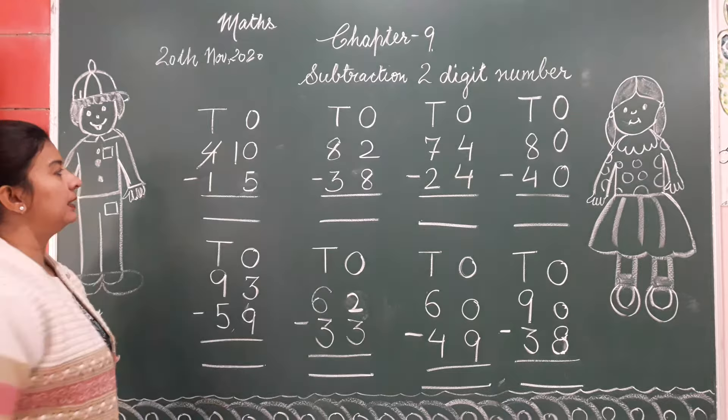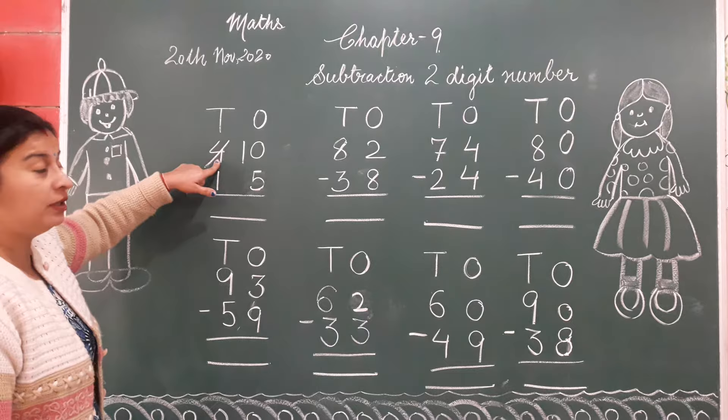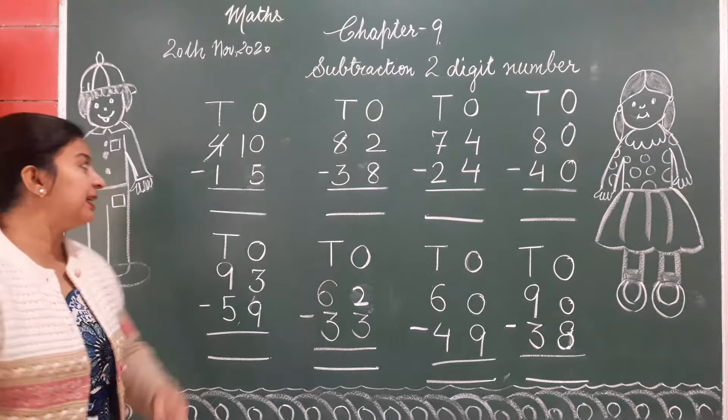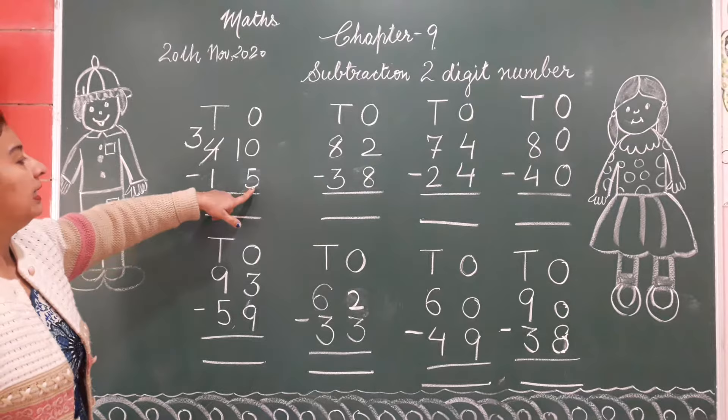We have taken borrow from 4. 1 we have taken. Now this number is 10. How many are left with 4? 4 has given 1. How many are left? 3. So right over here 3.